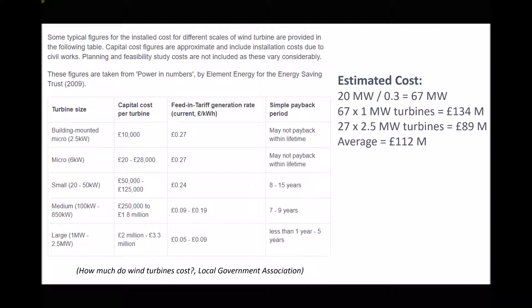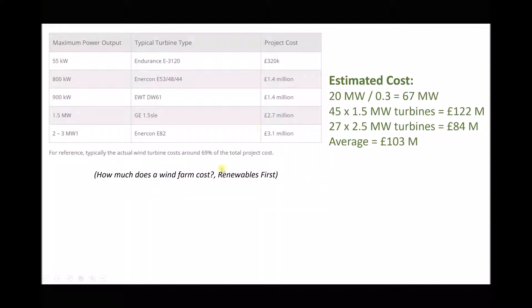Larger turbines tend to be cheaper per megawatt of power. We did a similar estimate using data from a consultancy called Renewables First, looking at one-and-a-half-megawatt turbines, of which we needed 45, giving a capital outlay of £122 million, and two-and-a-half-megawatt turbines requiring 27, giving a capital outlay of £84 million. From all those datasets, the average cost of our 67-megawatt capacity installation was somewhere in the order of £100 to £110 million.